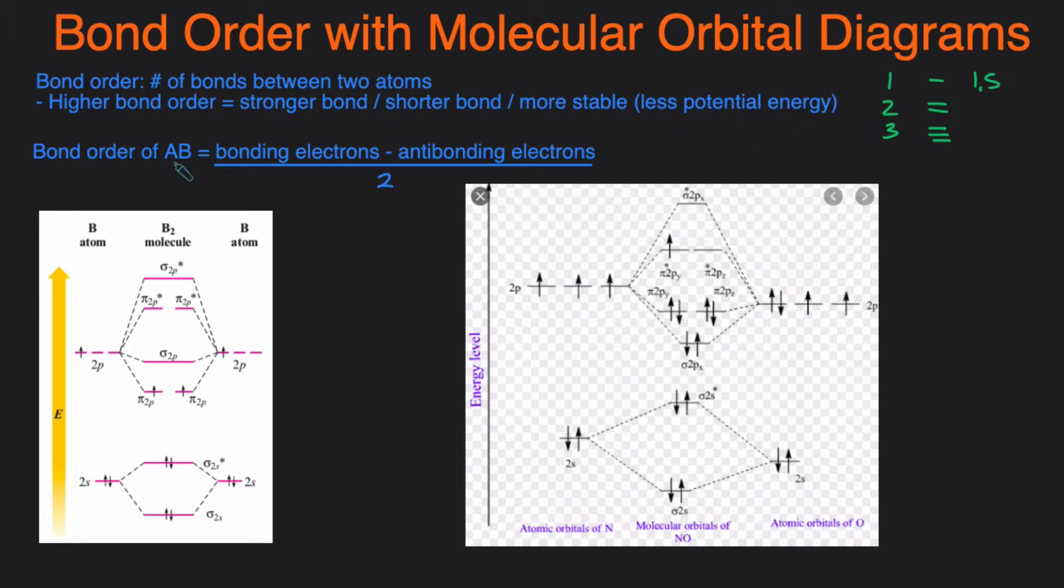When you're dealing with MO diagrams, the way to calculate bond order is using this equation. Bond order between two atoms is equal to the number of bonding electrons minus the number of antibonding electrons divided by two. So how can you tell what's a bonding electron and what's an antibonding electron?